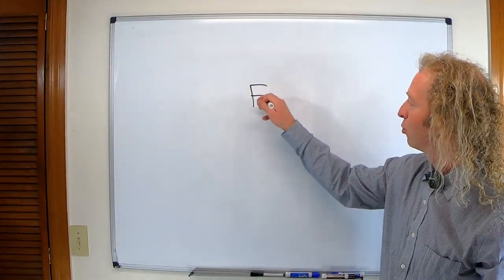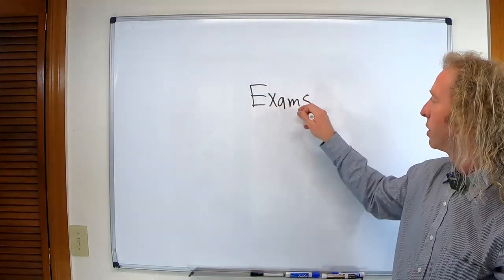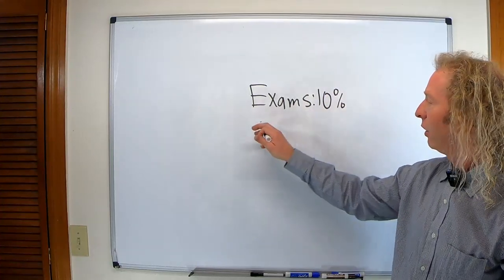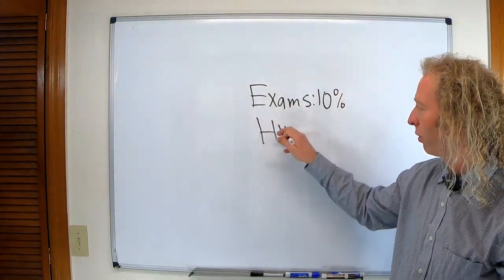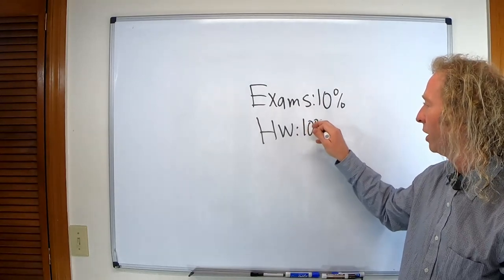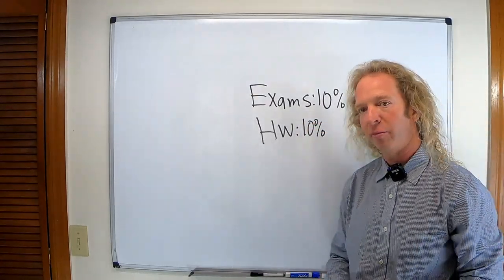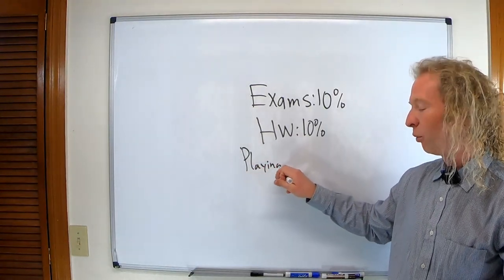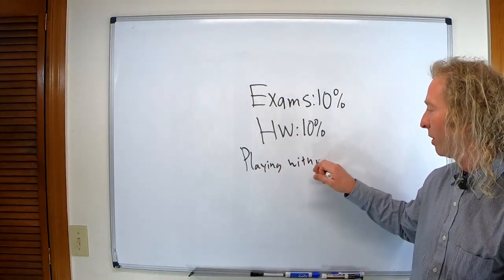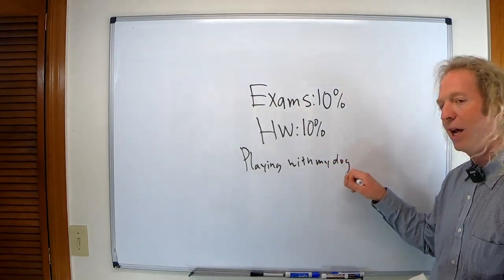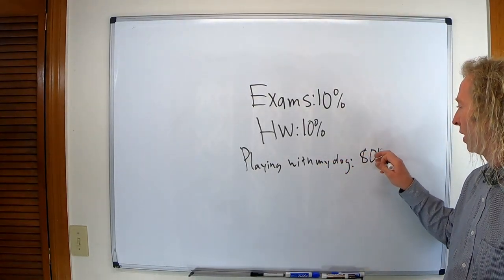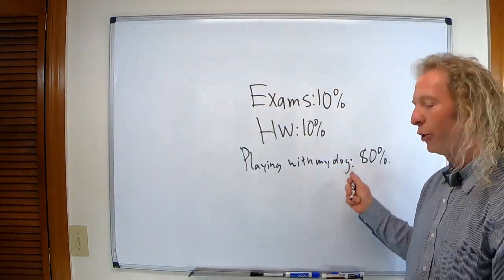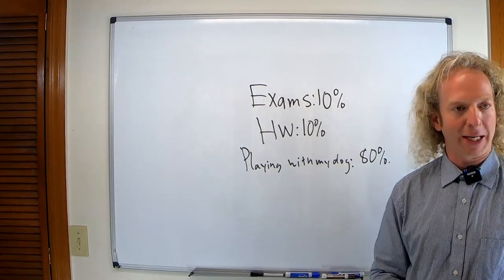In this classroom, the grade breakdown is as follows. Examinations are worth 10% of your grade. The homework is also worth 10% of your grade. And playing with my dog is worth 80% of your grade. So if you play with my dog and you don't take any exams or do any homework, you will pass this class with a B.